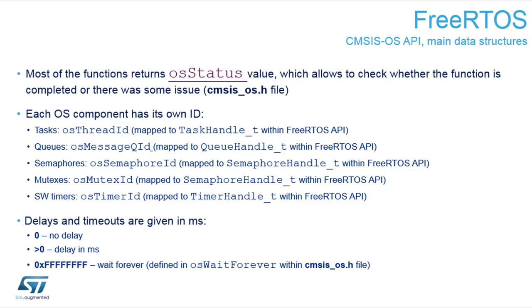The CMSIS RTOS still uses the original operating system underneath — it's a wrapper layer. When you call the OS function, it takes all the parameters, makes some security checks, and then calls the original function. So there are a couple of extra clock cycles on top.